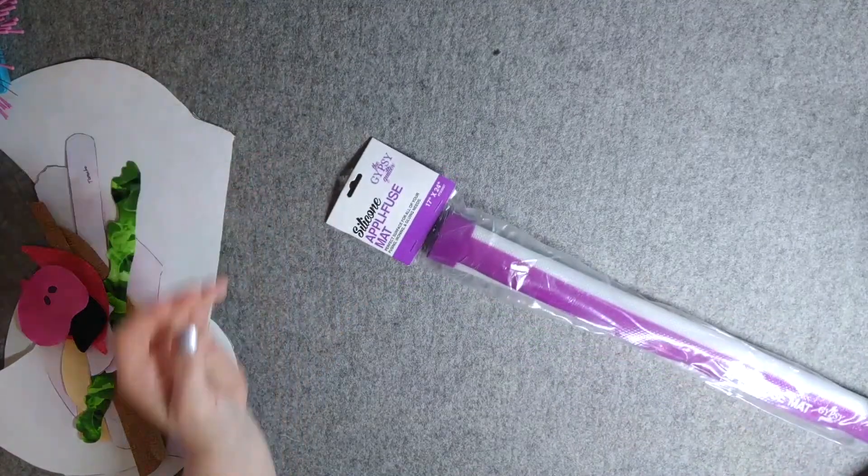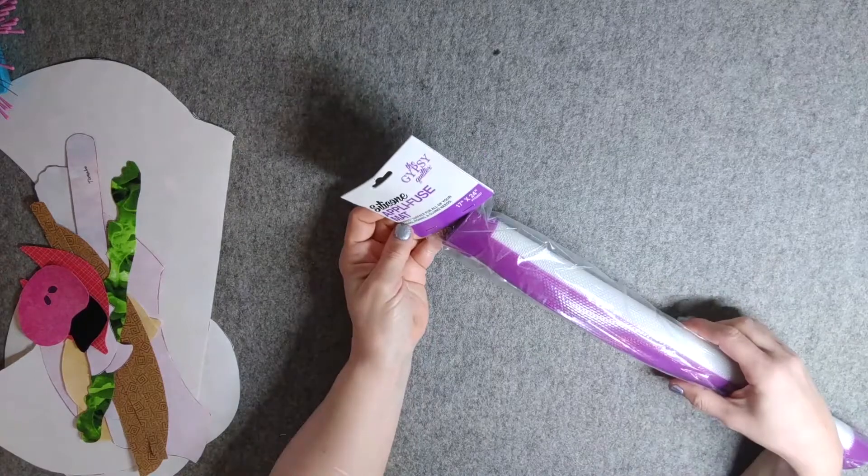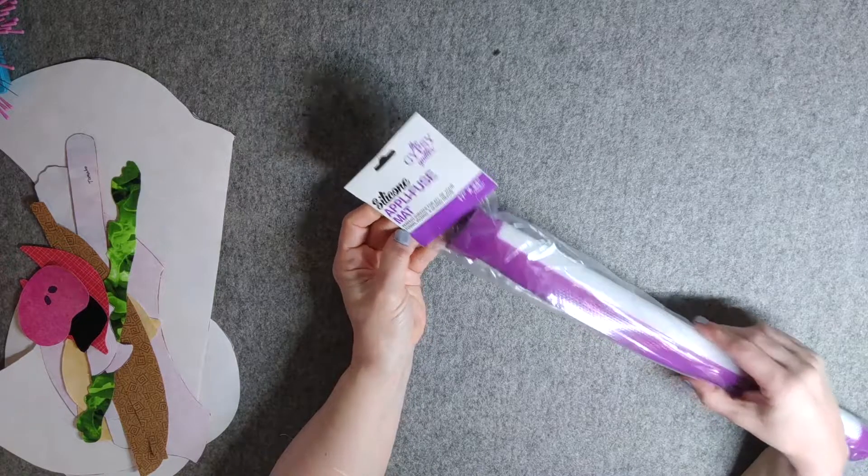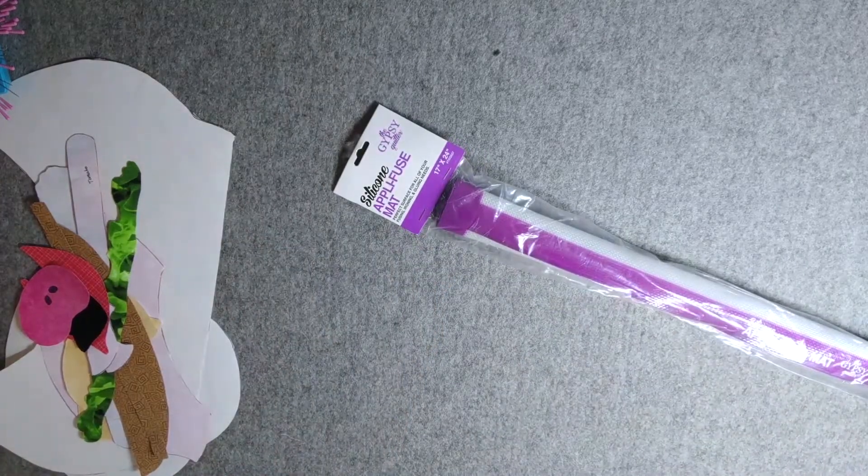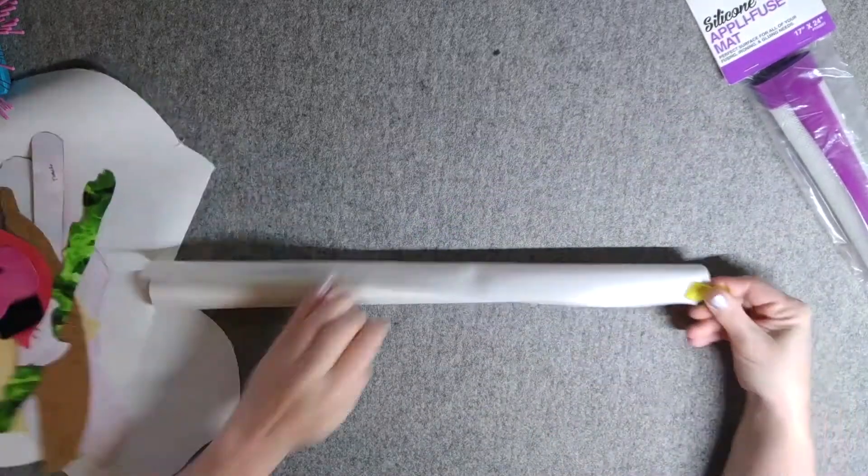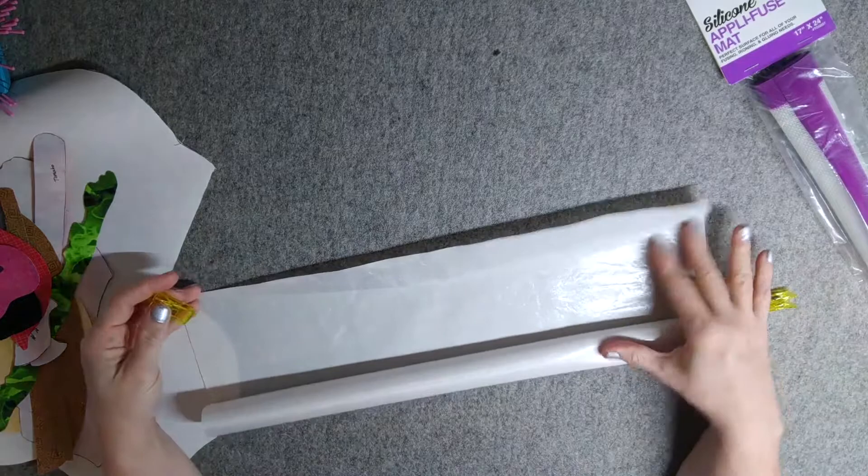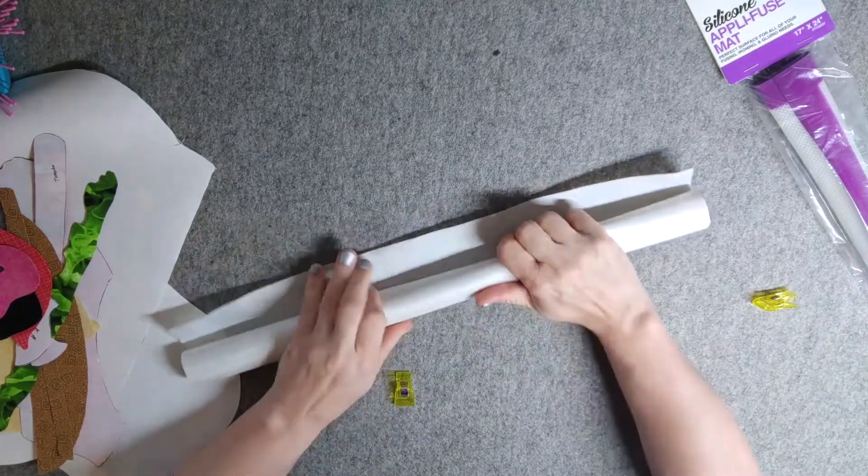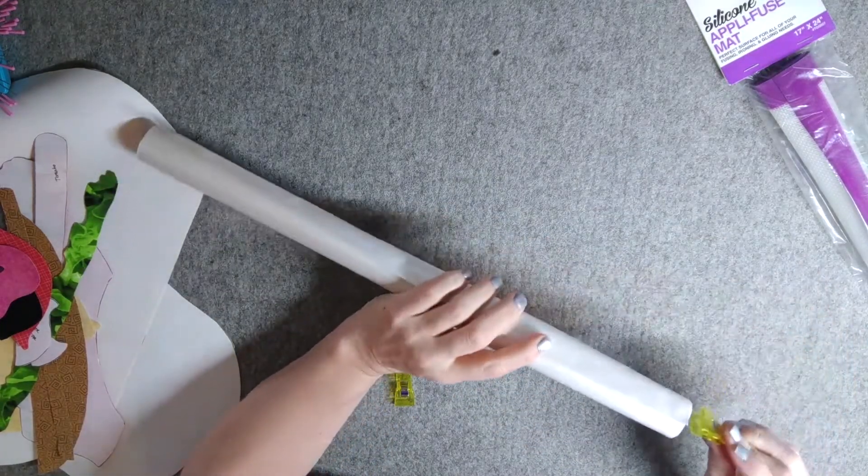I'm going to try the Gypsy Quilter Silicone Applifuse Mat. For years since I have started, I've always used the Bare Threads Applique Pressing Sheet. This is a sheet that we actually carry in stock on our website.